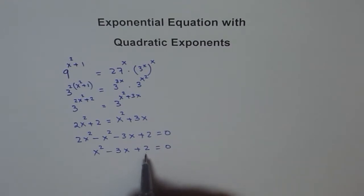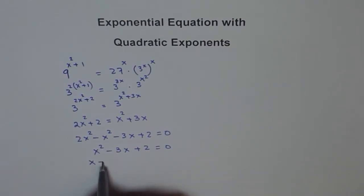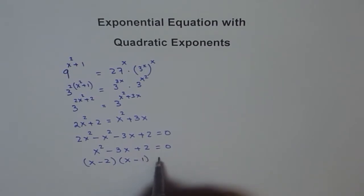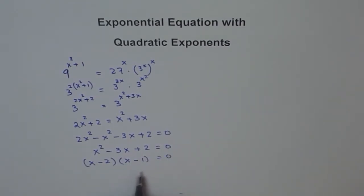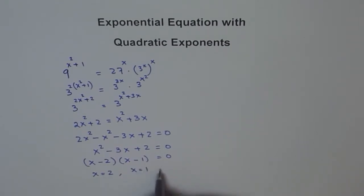Can this be factored? Yes — 2 times 1 is 2, and both can be taken as negative. So we factor this as x minus 2, times x minus 1, equals 0. This leads to two possible solutions: x equals 2 and x equals 1.